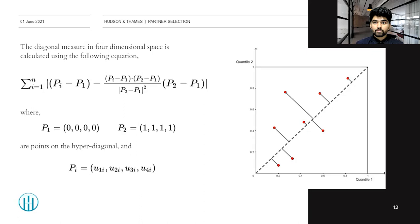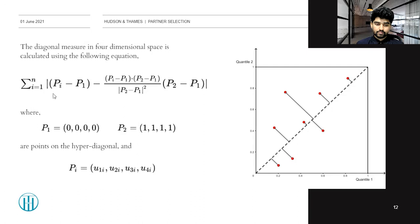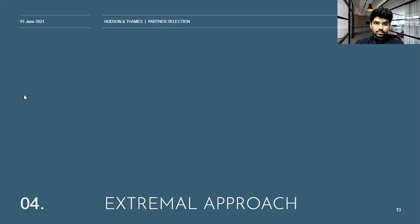A larger diagonal measure implies that the ranks deviate further from a perfectly linear relationship. Hence we try to find the pair of stocks which gives us the minimal value of the sum of Euclidean distances — that is, a pair of stocks which are as linearly related to each other as possible. Looking at the equation on the left-hand side, this equation calculates the diagonal measure in the four-dimensional case. Here N is the number of data points, P1 and P2 are given, and each Pi is basically the i-th data point combining all four rank data values. That's the geometric approach: calculating the diagonal measure and finding the quadruple which minimizes it.